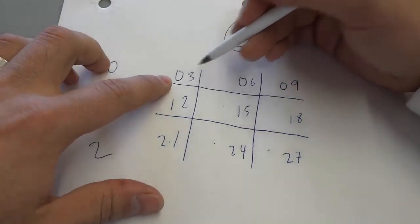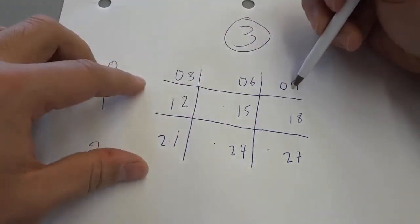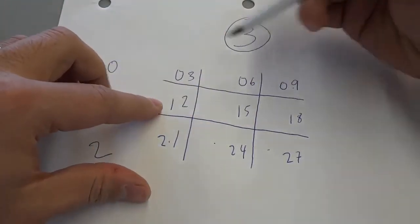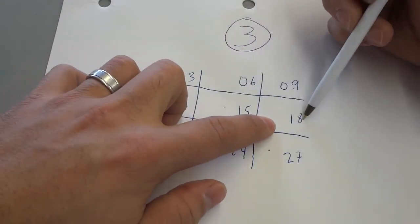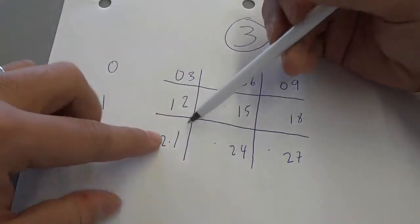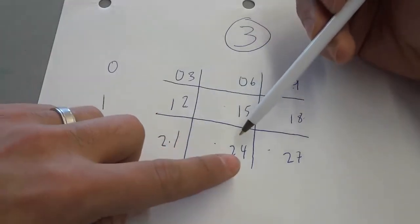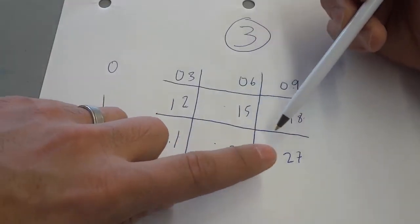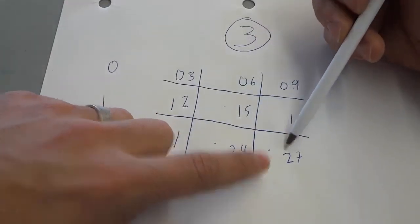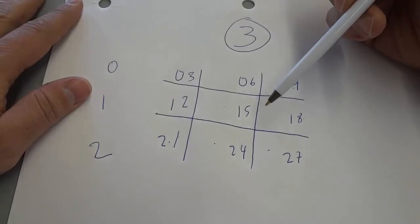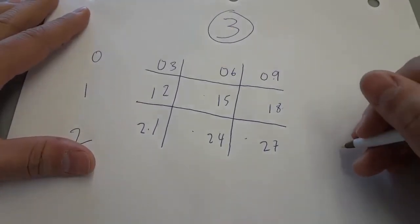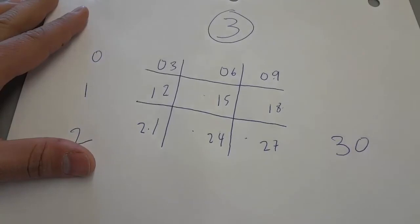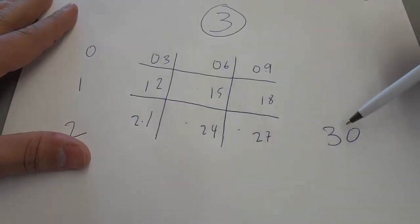3 times 1 is 3, 3 times 2 is 6, 3 times 3 is 9, 3 times 4 is 12, 3 times 5 is 15, 3 times 6 is 18, 3 times 7 is 21, 3 times 8 is 24, 3 times 9 is 27. And if you want to finish it off, you can just write 30 over here — a 3 and then a 0 — because 3 times 10 is 30.